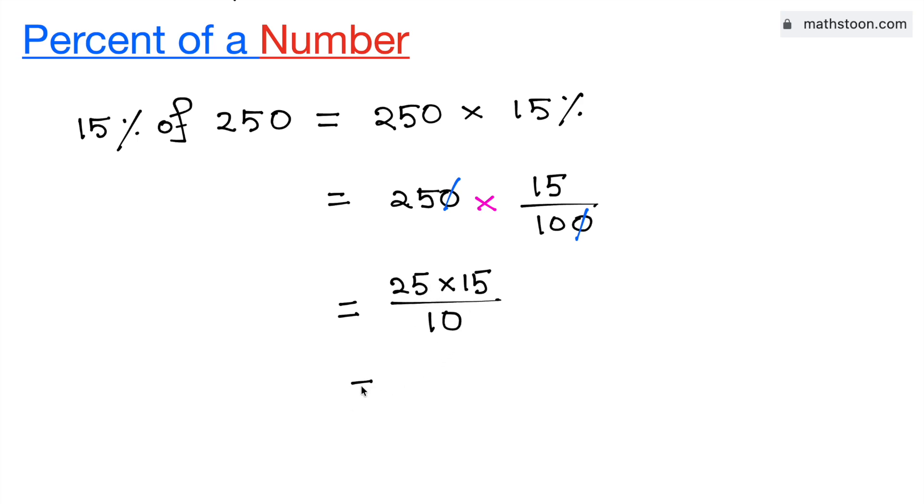Now we know that 25 times 15 is equal to 375 divided by 10. And this is equal to 37.5.